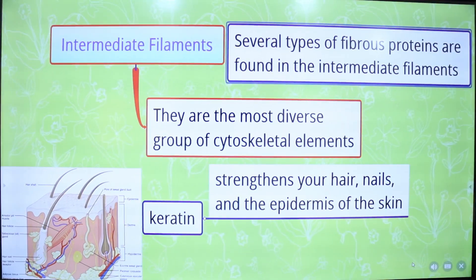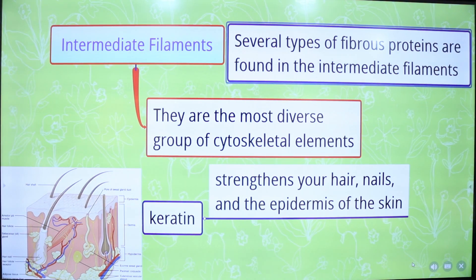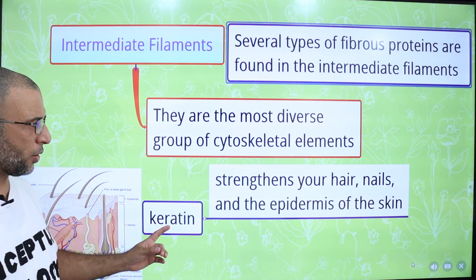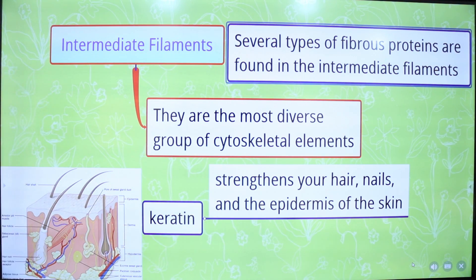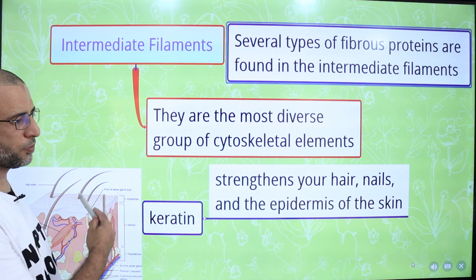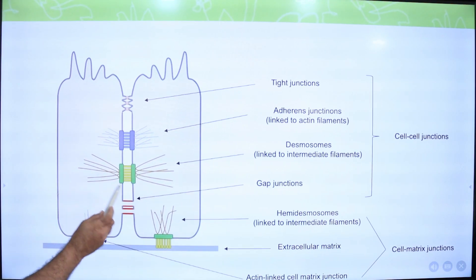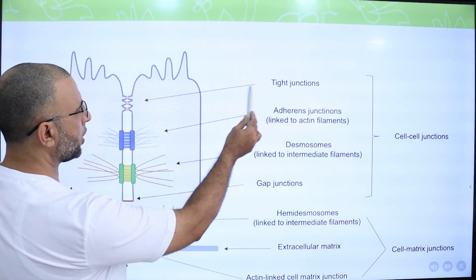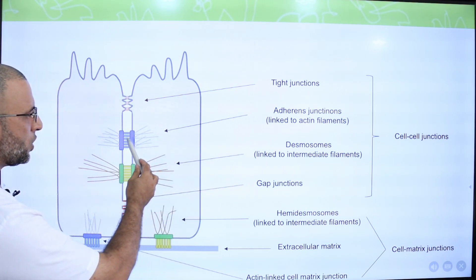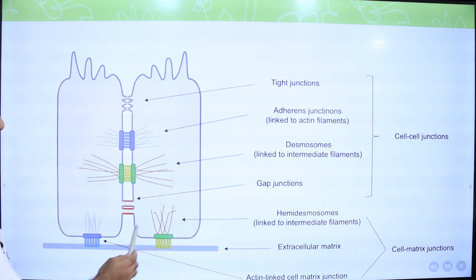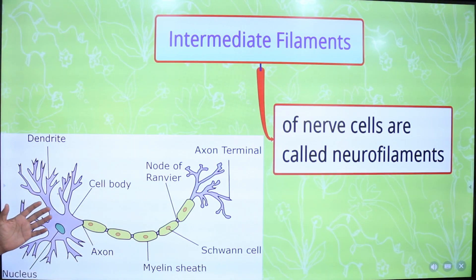Intermediate filaments are the most diverse group of skeletal elements, and several types of fibrous proteins are found in them. For example, keratin protein is present in hair, nails, and the epidermis of skin. Intermediate filaments also link cells to other cells by forming special cell-to-cell junctions, such as tight junctions, adherence junctions, desmosomes, and gap junctions. Intermediate filaments present in nerve cells are known as neurofilaments.